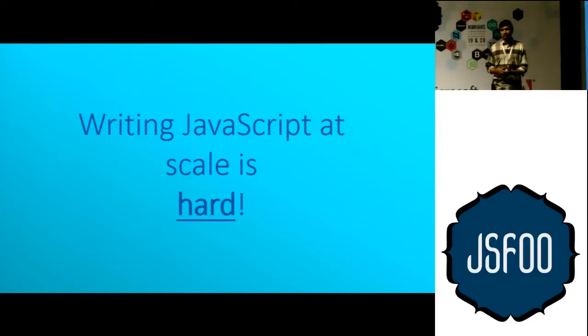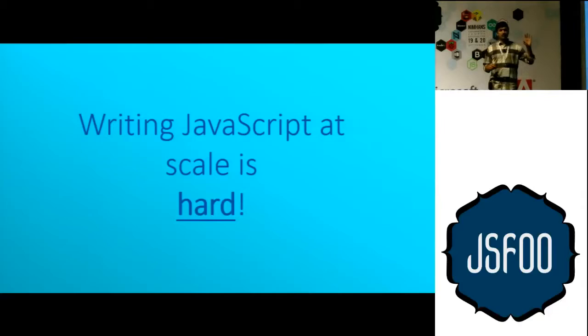If you're writing a one-file, 100-line JavaScript program, that's completely fine because you remember everything — all the state is in your head. But if you're building an application at scale with potentially 50 or hundreds of different files that have dependencies on each other, things can quickly get out of control.